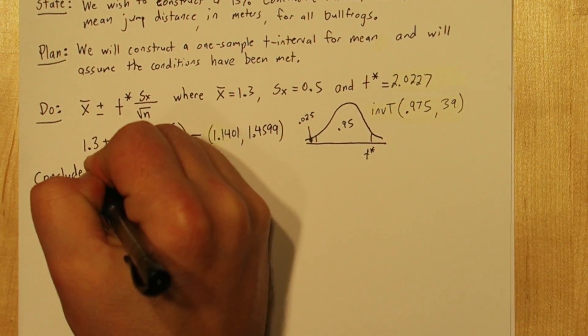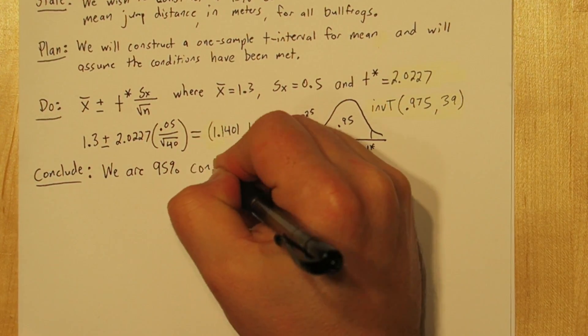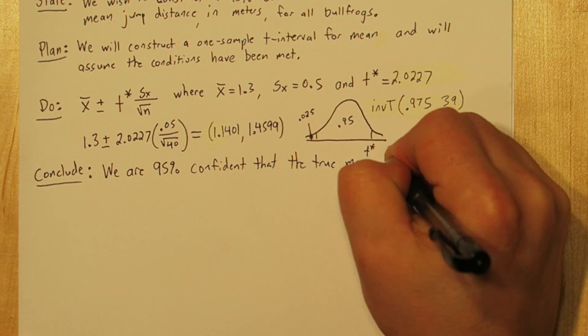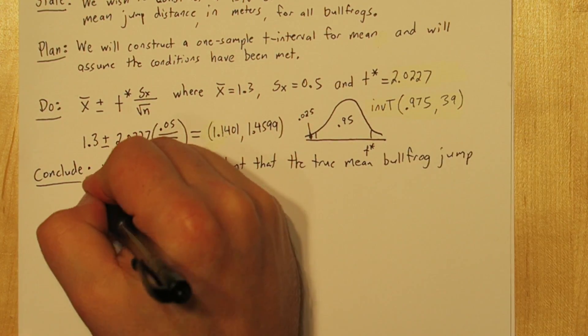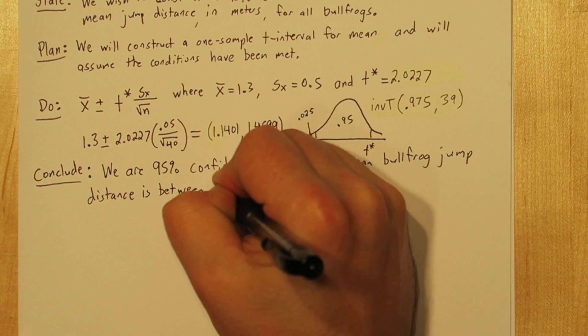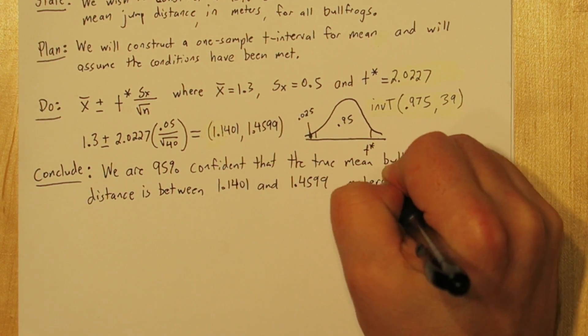Now we're ready to conclude. We are 95% confident that the true mean bullfrog jump distance is between 1.1401 and 1.4599 meters.